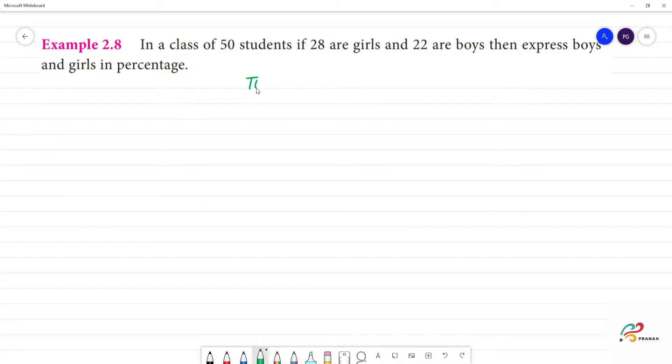What is total students? Total students, 50. Girls is equal to 28. Boys is equal to 22.